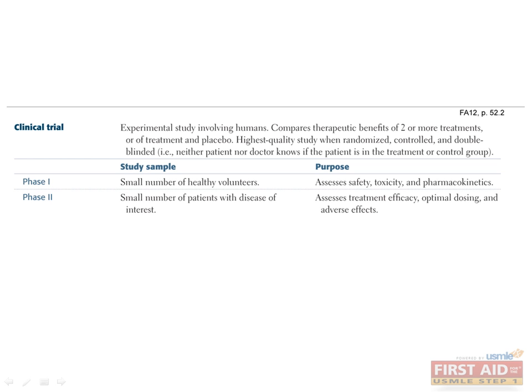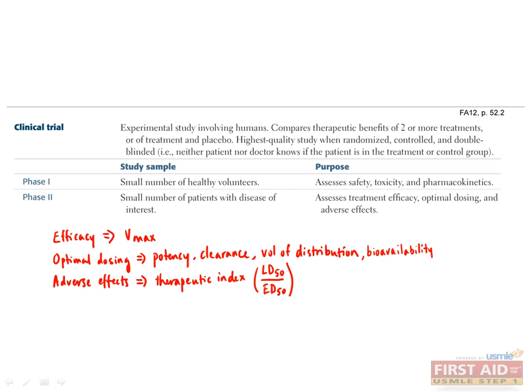In pharmacology, the parameters used to describe efficacy, optimal dosing, and adverse effects are as follows: efficacy is defined in terms of Vmax; optimal dosing is defined in terms of potency, drug clearance, volume of distribution, and bioavailability; and adverse effects are defined by therapeutic index, which is the median lethal dose over the median effective dose, or LD50 over ED50. These concepts are discussed in more detail in the Pharm section.